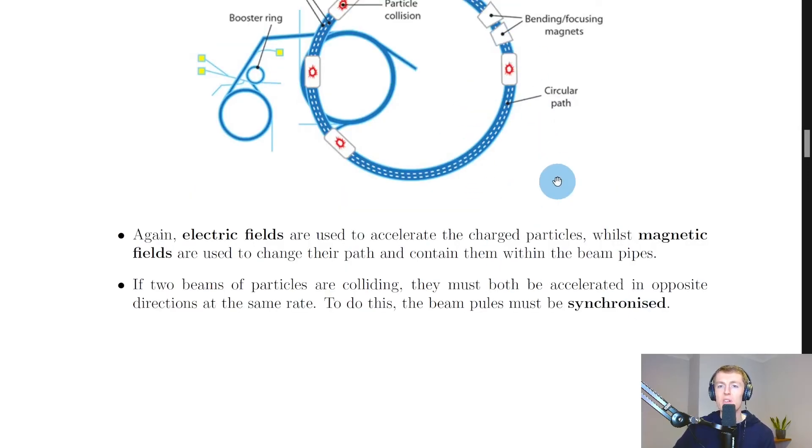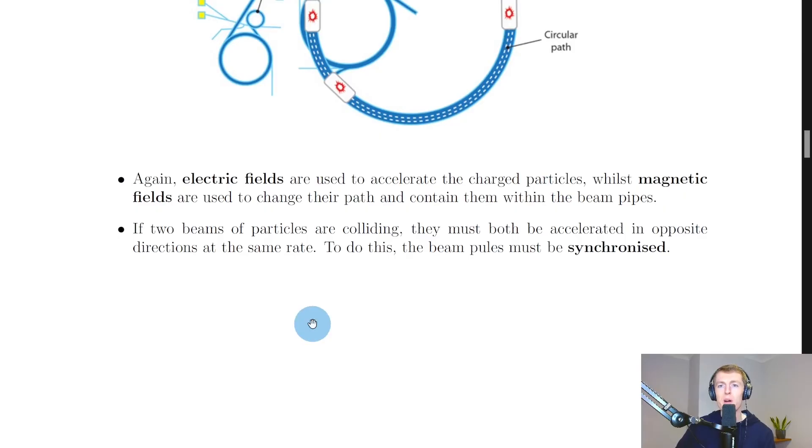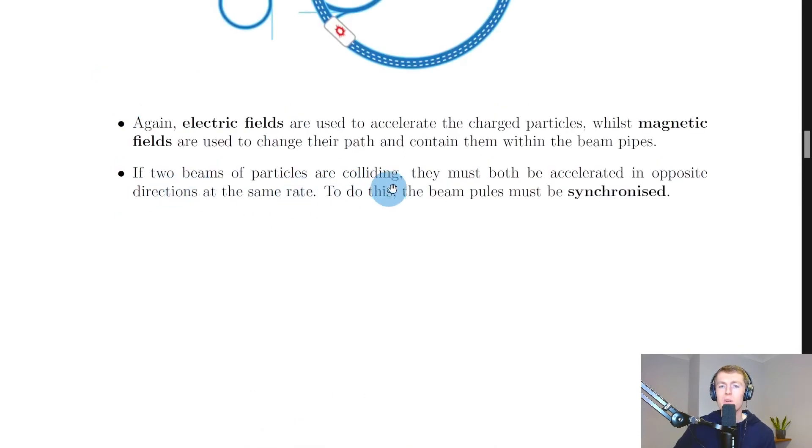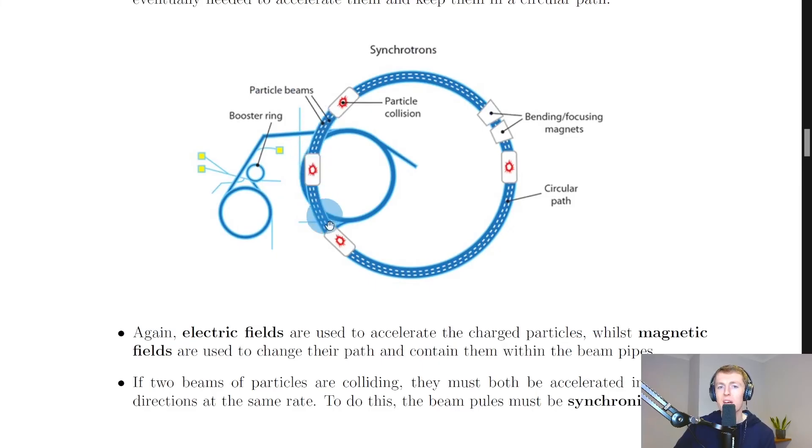Lastly, one important part of synchrotrons is where it actually gets its name and is to do with the word synchronized or synchronization, which is to do with two things happening at the same time, and you can see that synchro part of the name there. So we say that if two beams of particles are colliding, they must both be accelerated in opposite directions at the same rate. To do this, the beam pulses must be synchronized. So if we have two particle beams in the ring here that are traveling in opposite directions and then we eventually want to collide them at the same speed, then we need to make sure that the beam pulses are synchronized and that they have been accelerated to the exact same speed. And that is where the synchrotron gets its name.